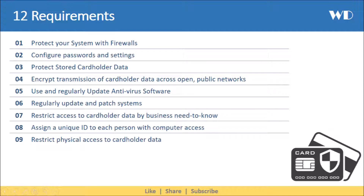The ninth requirement is to restrict physical access to cardholder data. Electronic data breaches are not the only source of data loss — physical access to systems should also be limited and monitored using appropriate controls. Procedures should be implemented to distinguish between on-site personnel and visitors, and physical access to sensitive areas. Media should be destroyed in specific ways when no longer required.